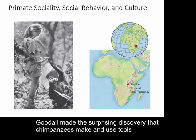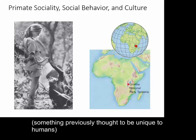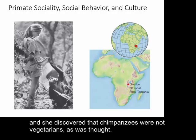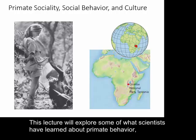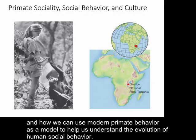Goodall made the surprising discovery that chimpanzees make and use tools, something previously thought to be unique to humans, and she discovered that chimpanzees were not vegetarians as we thought. They hunted small antelopes, warthogs, and even monkeys. This lecture will explore some of what scientists have learned about primate behavior, and how we can use modern primate behavior as a model to help us understand the evolution of human social behavior.